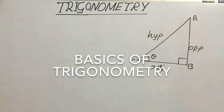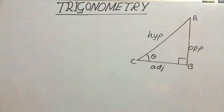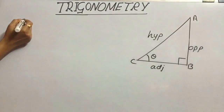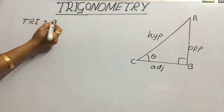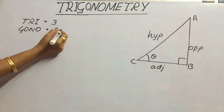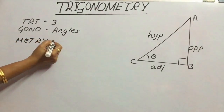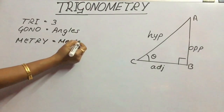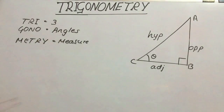Hi everyone, today let us consider some basic concepts on trigonometry. If we consider the word trigonometry itself: 'tri' means 3, 'gono' or 'gonia' relates to angles, and 'metric' relates to measure. All these words are Greek words. Combining them, we get the word trigonometry, which means the measure of angles of a triangle.